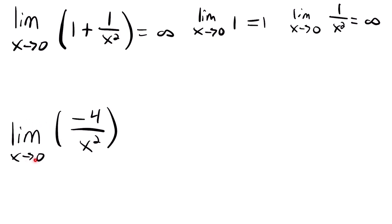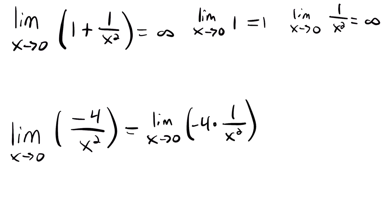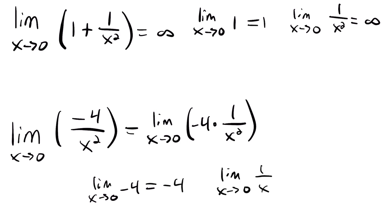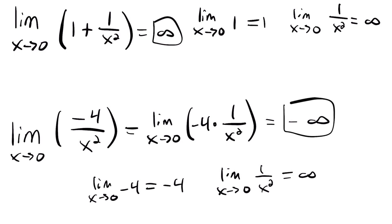Next, the limit as x approaches 0 of negative 4 divided by x squared can be rewritten as the limit of negative 4 times 1 over x squared. The limit of negative 4 is negative 4 (a negative finite value), and the limit of 1 over x squared is infinity. By the product property, a negative finite limit times a positive infinite limit gives negative infinity.